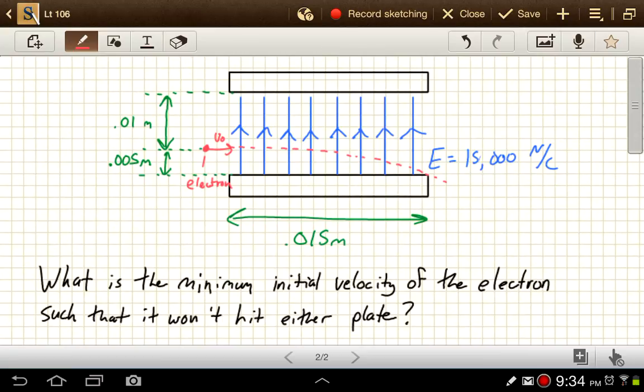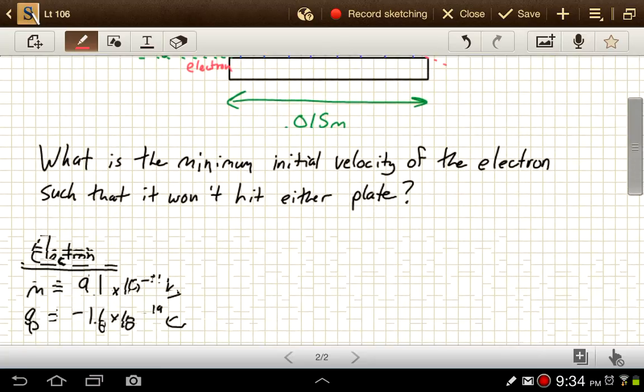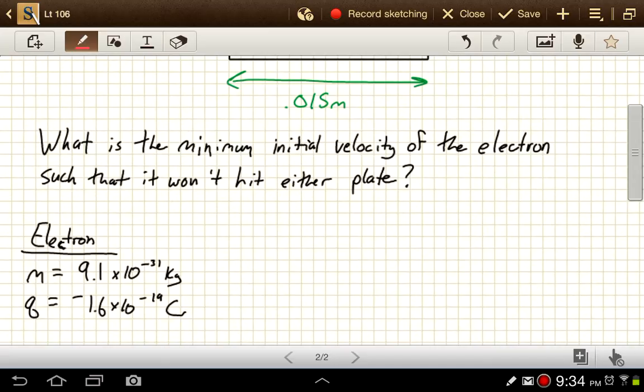So what do we know here? We've got the electric field given to us. We've got this distance and these two distances. It turns out that we're not going to care about that distance. That would only be relevant if this were a positive particle. We also know that it's an electron. So for electrons, the mass is on your list of constants. 9.1 times 10 to the negative 31st kilograms. The charge is negative 1.6 times 10 to the negative 19th coulombs.